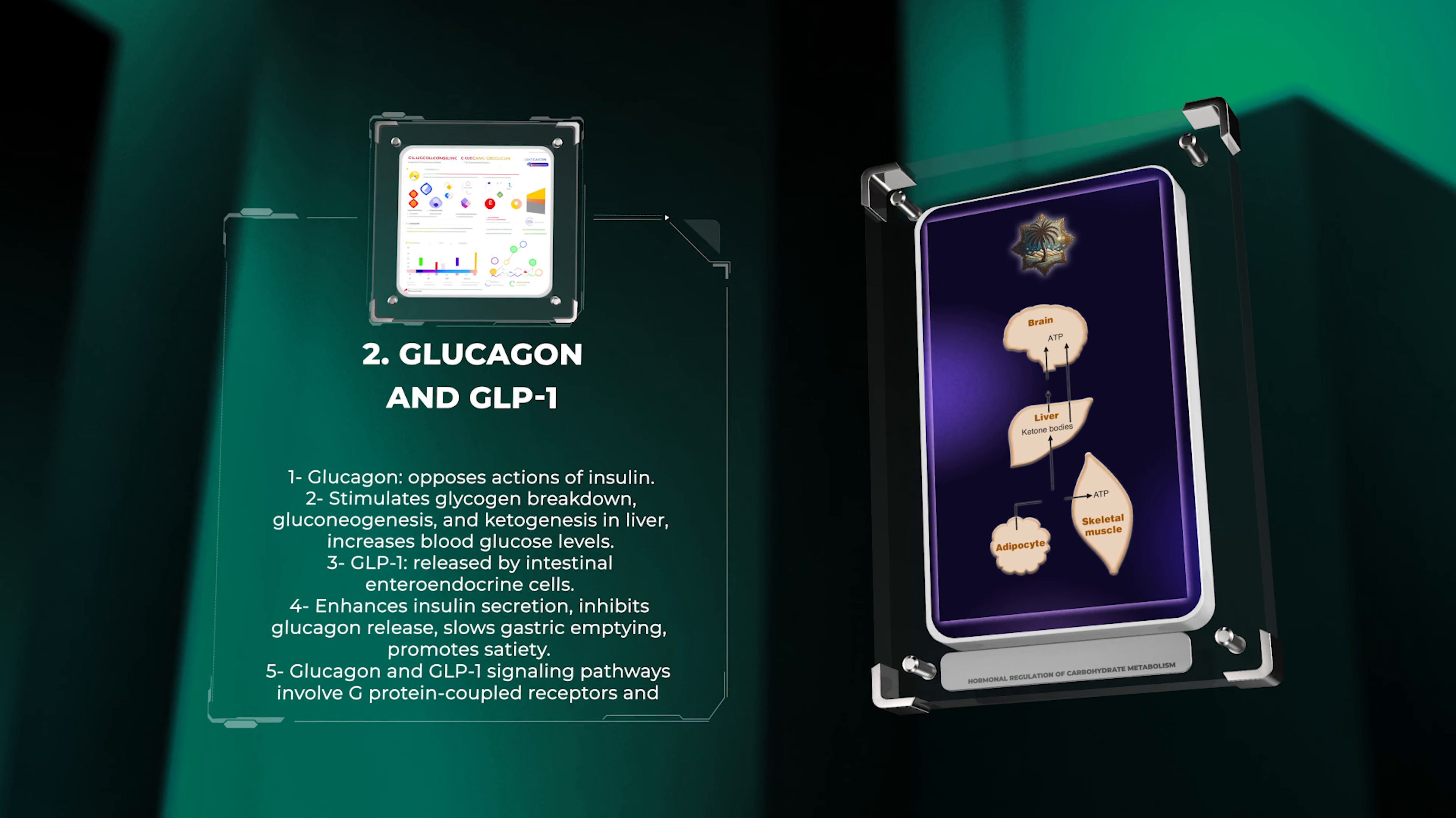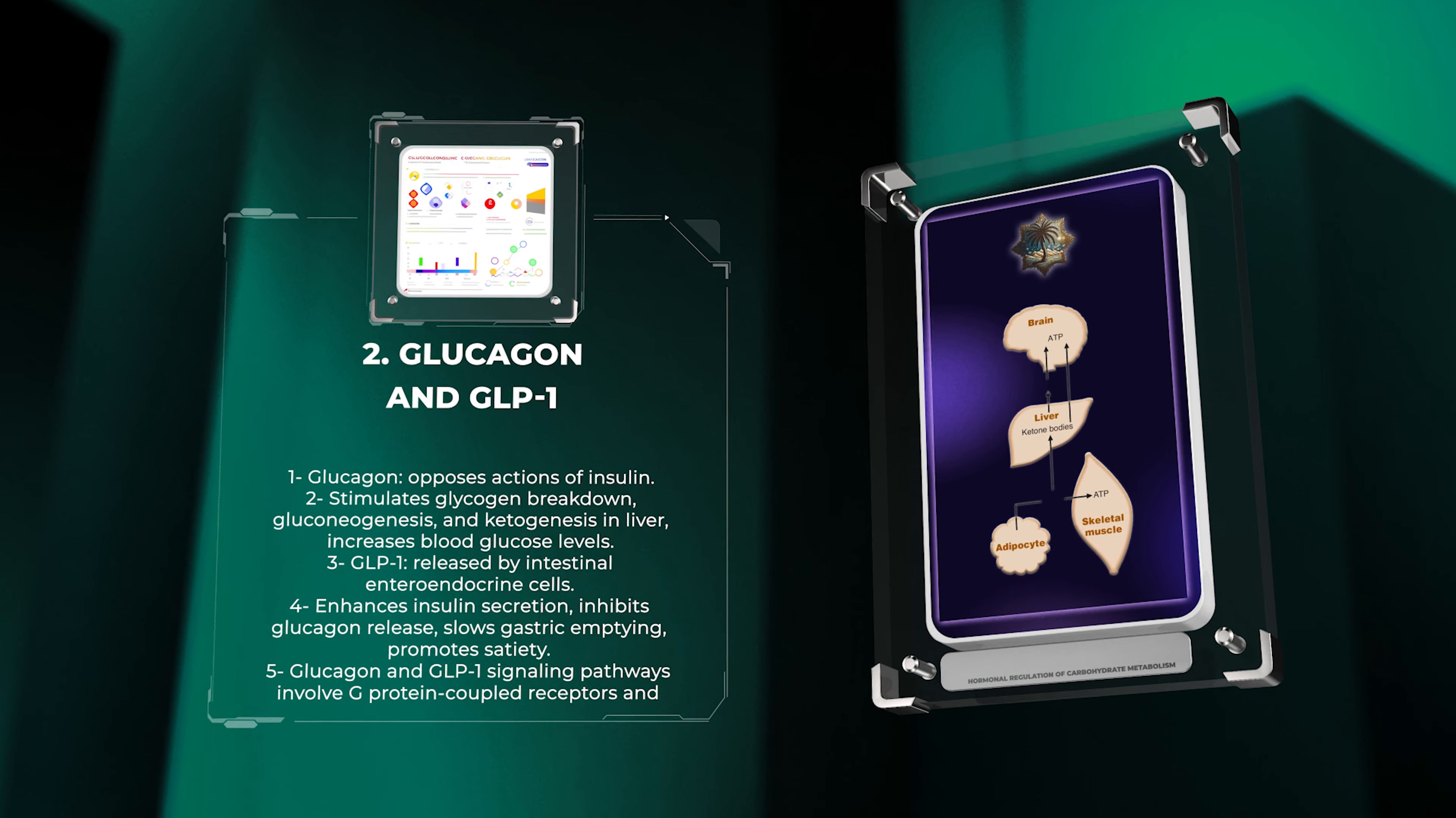Glucagon, secreted by pancreatic alpha cells, opposes the actions of insulin. It stimulates glycogen breakdown, gluconeogenesis, and ketogenesis in the liver, thereby increasing blood glucose levels. On the other hand, GLP-1, glucagon-like peptide 1, is an incretin hormone released by intestinal enteroendocrine cells.